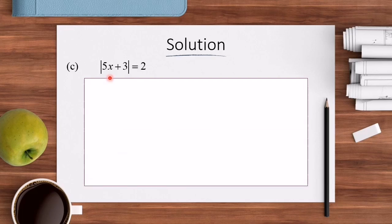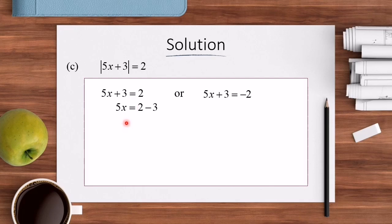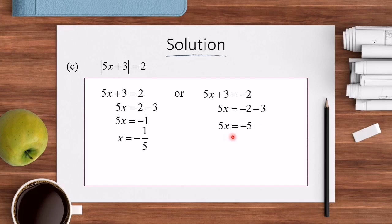Now we continue with the solution for Question C: |5x − 3| = 2. Since this is 1 absolute value, we straight away use the basic definition. So 5x − 3 = 2 or 5x − 3 = −2. Solving the first equation: 5x = 2 − 3, so 5x = −1, giving X = −1/5. Solving the second gives X = −1. So the answer is X = −1/5 or X = −1.